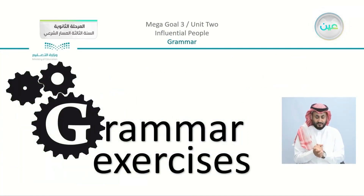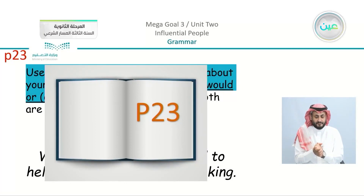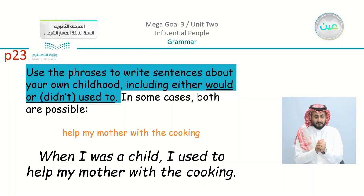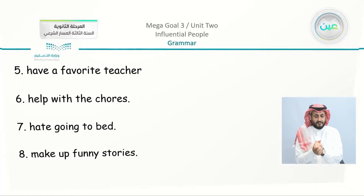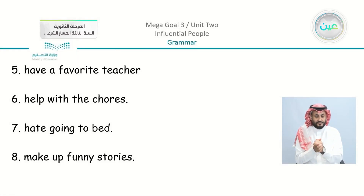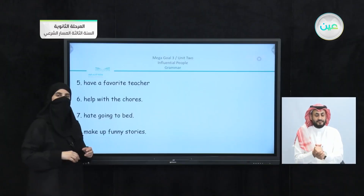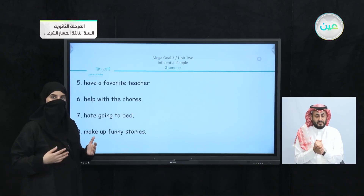Going to the grammar exercises, we have on page number 23 the homework, which we are going to complete now. Now we have here: have a favorite teacher. So here we are going to use either would or used to.